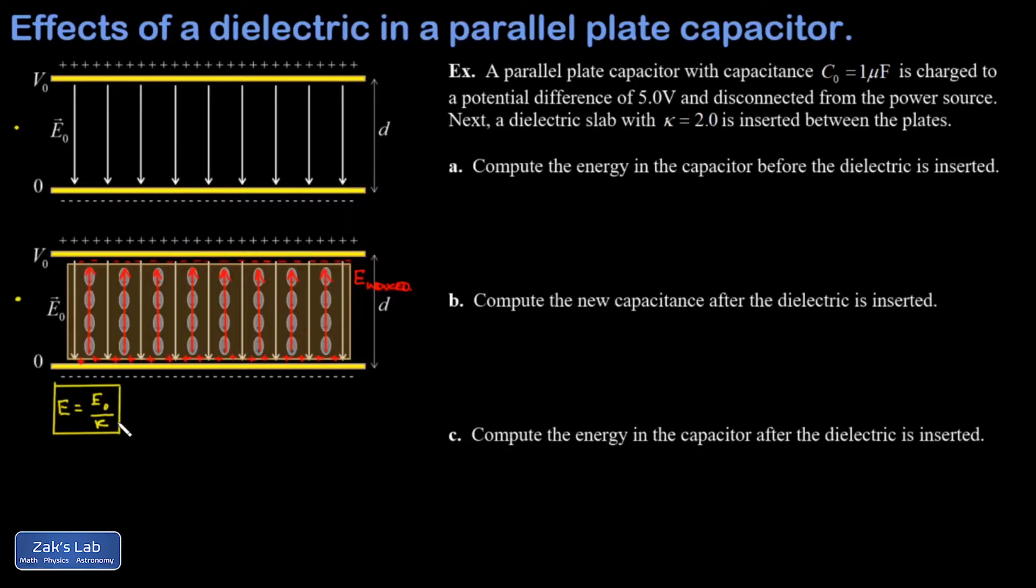And that kappa is called the dielectric constant, that's just a property of a material and every different type of material has a different kappa. Well if the electric field between the plates has been reduced, then I know the potential between the plates has been reduced as well. So what I'm appealing to here is the fact that the electric